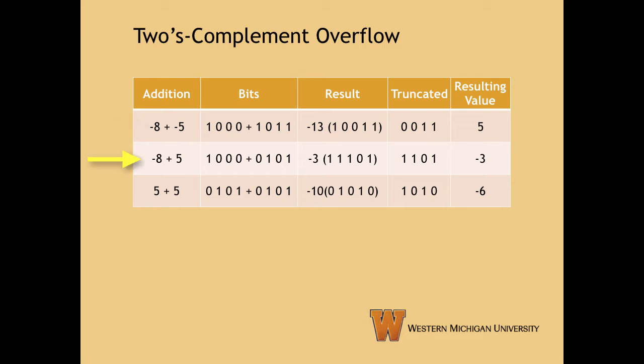The second row shows a case that actually acts as we expect. The carry bit is dropped, but because the carry bit and the most significant bit of the truncated bit vector are both one, we actually end up getting the negative three we would expect from adding negative eight and positive five.